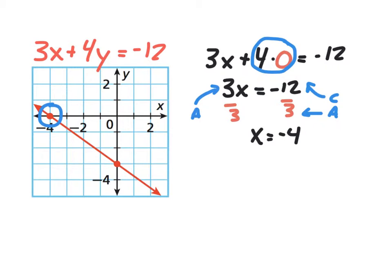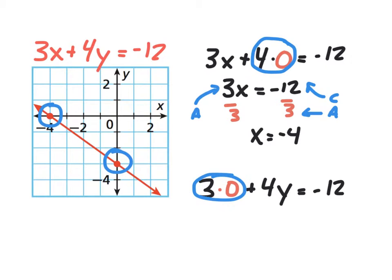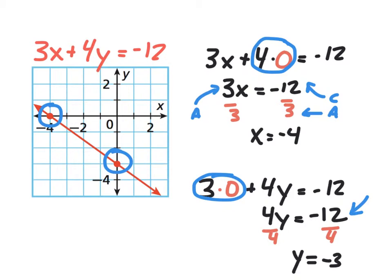Now let's find the y-intercept the same way. When finding the y-intercept, the x-coordinate is zero, so we plug zero in where x is. The a term becomes zero, leaving four y equals negative twelve. Dividing by four gives us y equals negative three — the y-intercept. Notice once again what we did: c divided by b gives the y-intercept. So c divided by a gives the x-intercept, and c divided by b gives the y-intercept — that's going to be important in a moment.